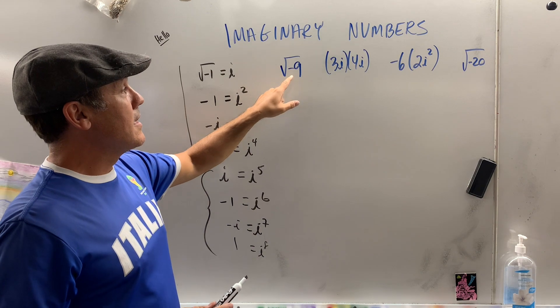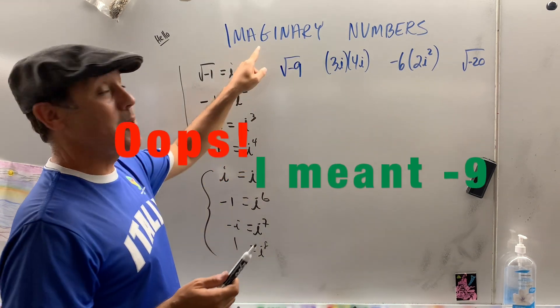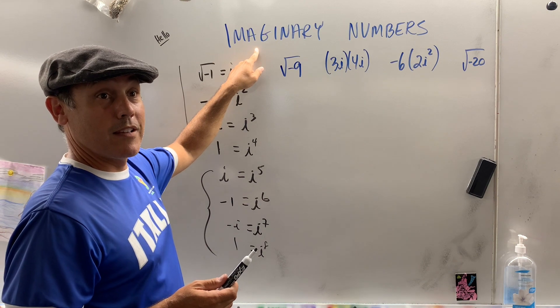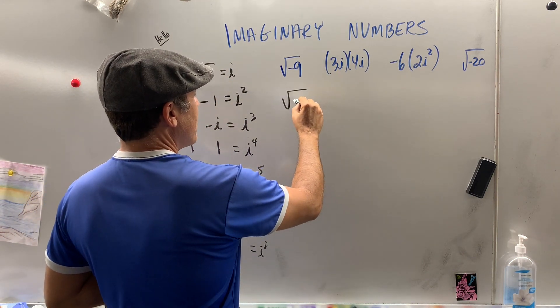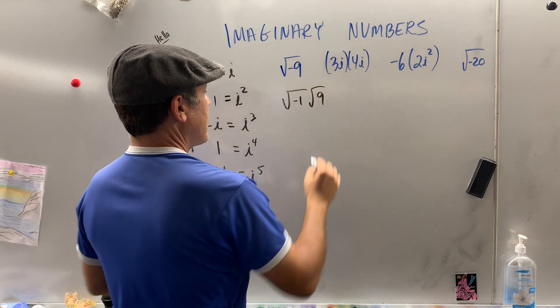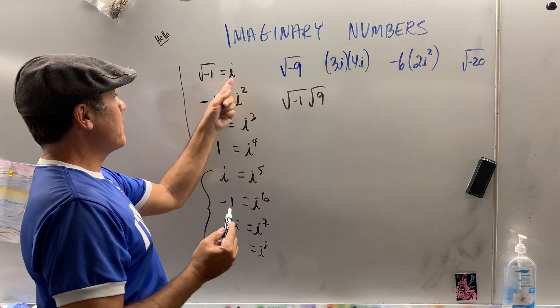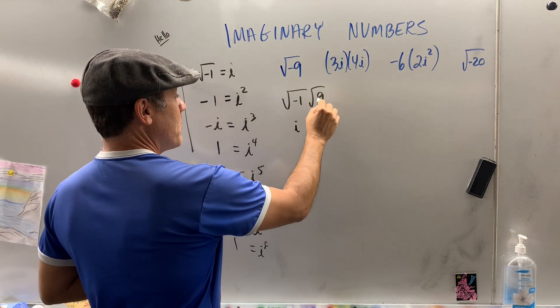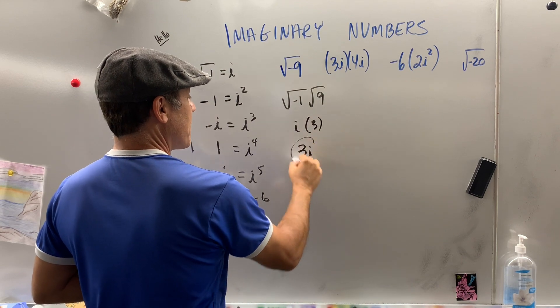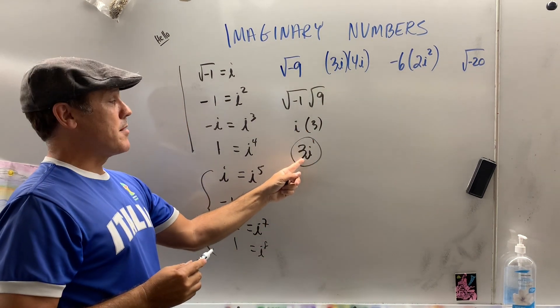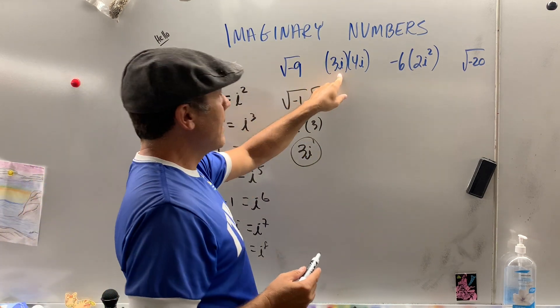The square root of -9 - used to say no real solution. Now there is a solution, but it's an imaginary solution. So what you could do is break this down like this. If you pull out this negative 1, square root of negative 1 - what's the square root of negative 1? i. And then what's the square root of 9? 3. So my answer is 3i. By the way, always put the number and then the i. Don't say i3.